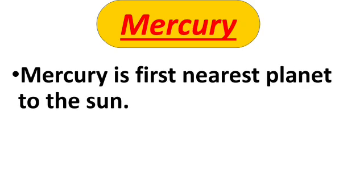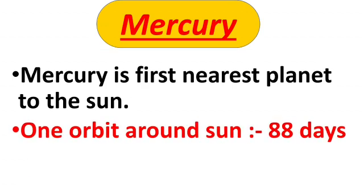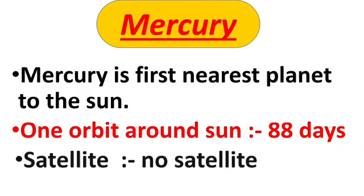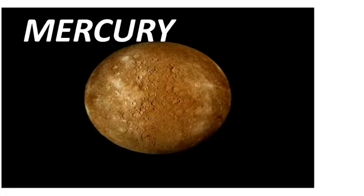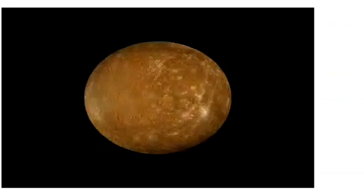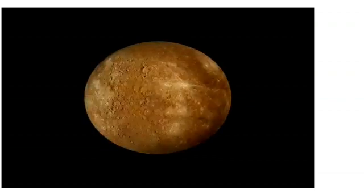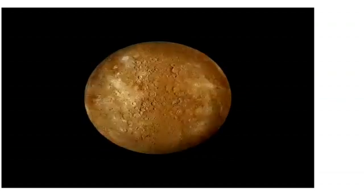Mercury is the first nearest planet to the sun. Mercury takes 88 days to complete one revolution around the sun, and it has no satellite. Mercury has no gases, and because of this, life is not possible on Mercury.